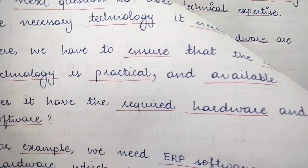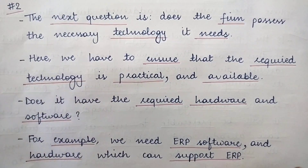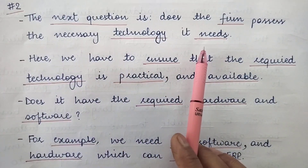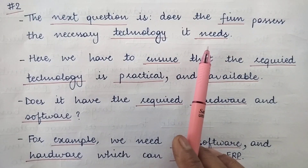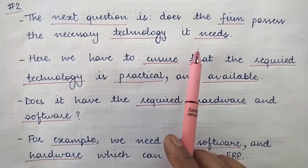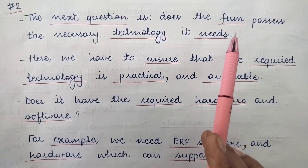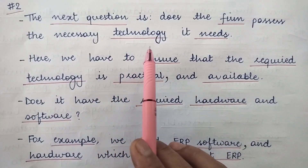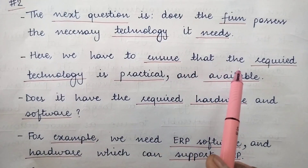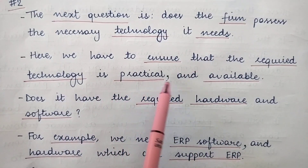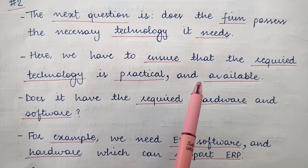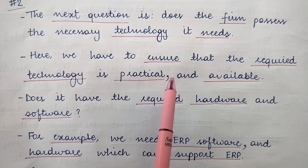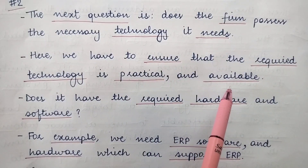The second factor considered in technical feasibility is: does the firm possess the necessary technology it needs? The system analyst has come up with a proposal for a specific technology, but the next question is whether the client or firm for which the information system is being developed actually has that necessary technology. We have to ensure that the required technology is practical, usable, and available — the proposed hardware or software may be ideal, but it must also be easily available.